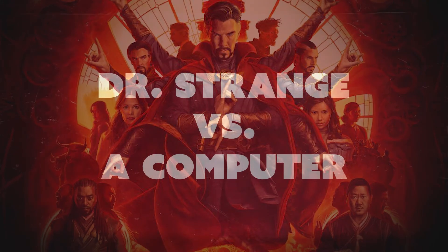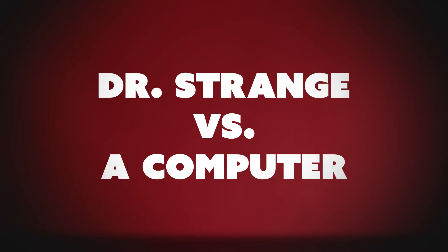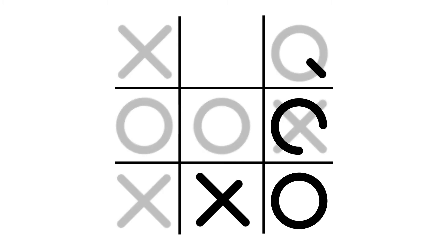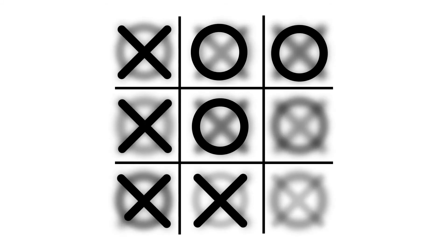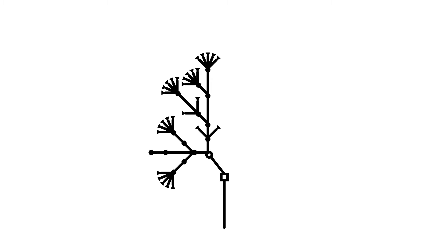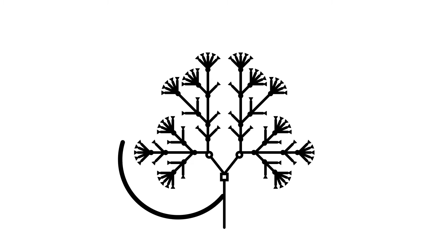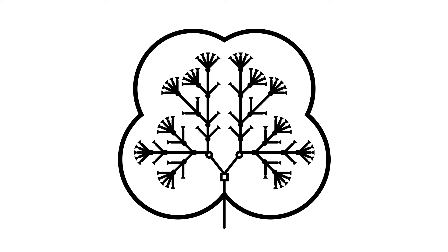So, let's say Dr. Strange challenges a computer to a game of tic-tac-toe. Who will win? Both magician and machine begin with an examination of all opening moves, all possible corresponding moves, and so on and so forth all the way to the end of all possible games. Visualized, these possibilities with their nodes and branches are called trees. A tree for tic-tac-toe is relatively short, somewhere in the ballpark of 360,000 possible games with no one longer than nine moves. Both would see that unless one of them made a mistake, the game would always end in a tie.